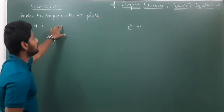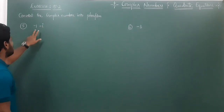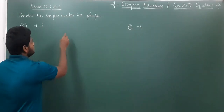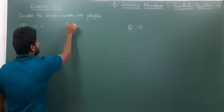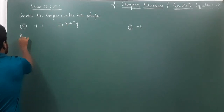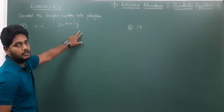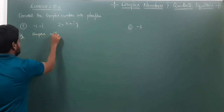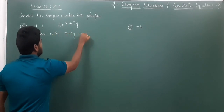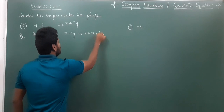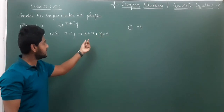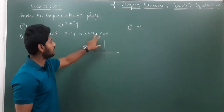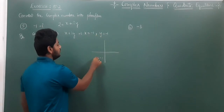The question is: convert the complex number -1 - i into polar form. We consider Z = X + iY as the complex number form. Comparing with X + iY, we get X = -1 and Y = -1. If we observe, X is also -1 and Y is also -1. In the two-dimensional Argand plane, when we get minus and minus, that corresponds to the third quadrant.